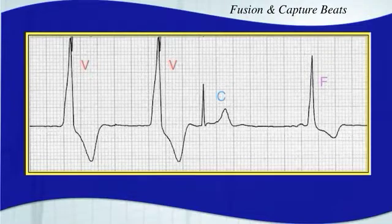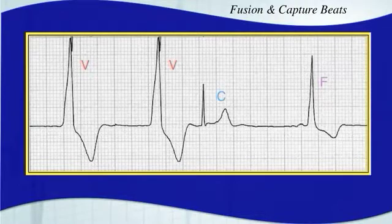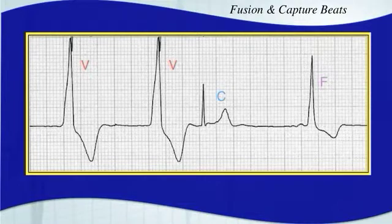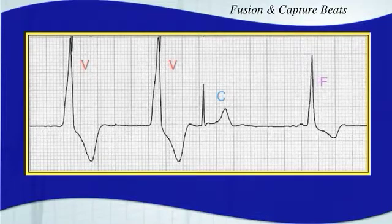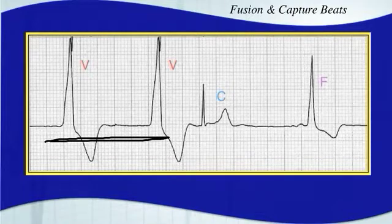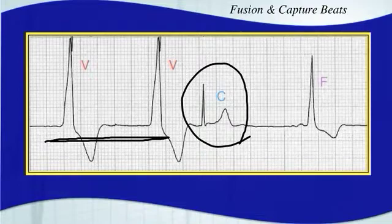So far we've talked about the intrinsicoid deflection, Brugada sign, and Josephson sign. Now let's talk about fusion and capture beats. Let's say we have an idioventricular or accelerated ventricular arrhythmia. The V's stand for ventricular — that's your underlying rhythm. So this underlying rhythm is continuing, and then all of a sudden you have something that is a capture beat.